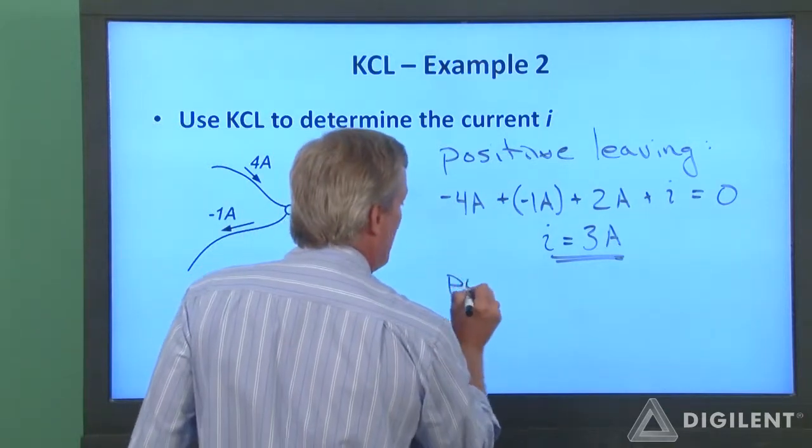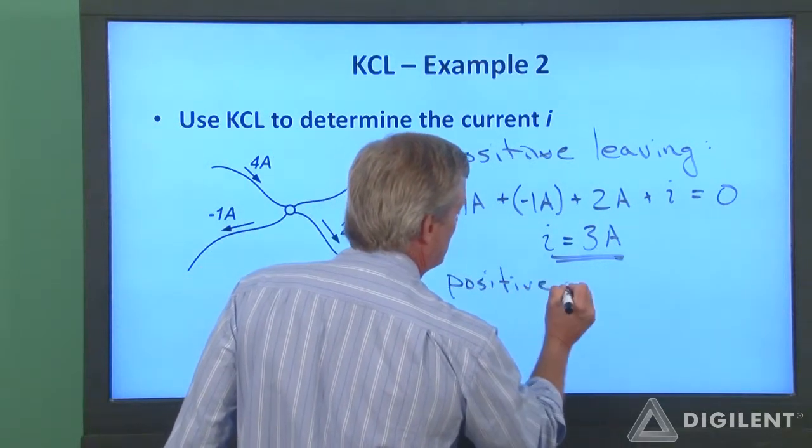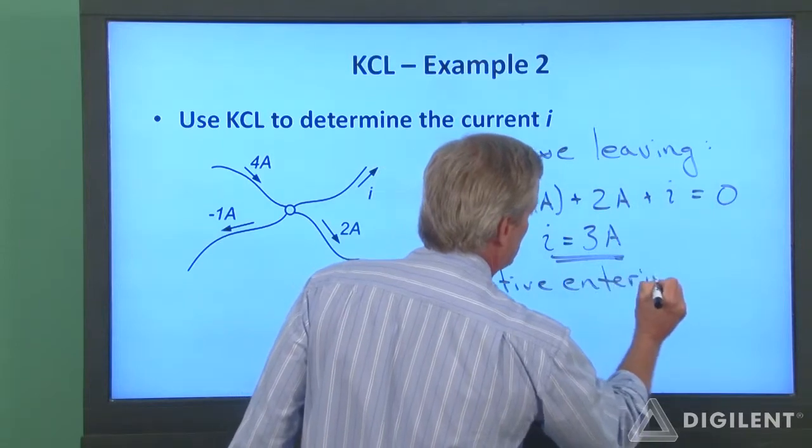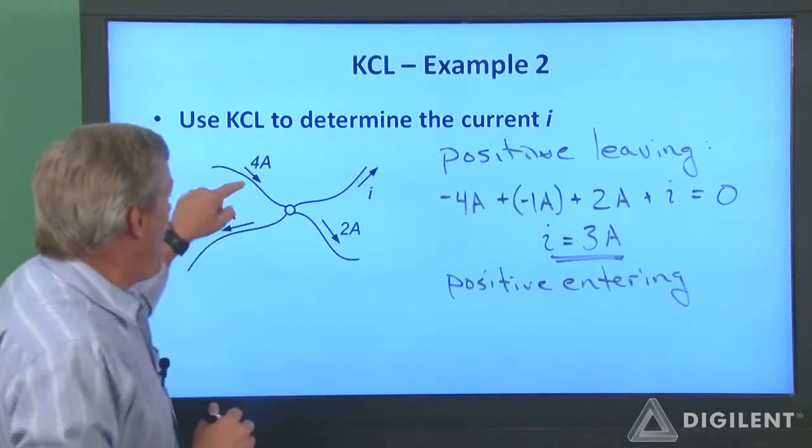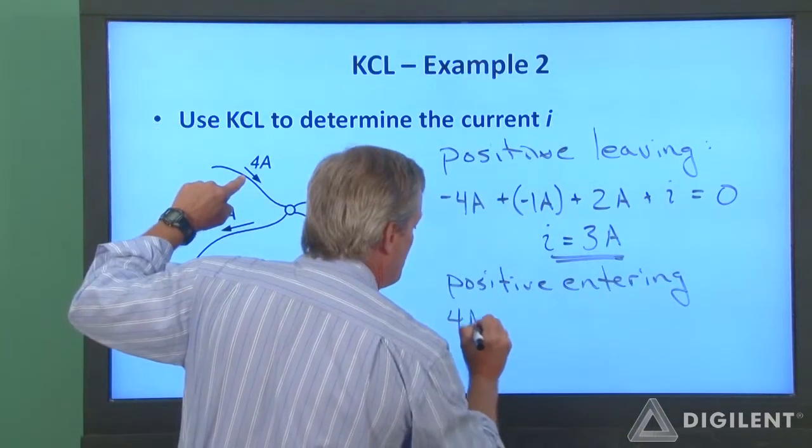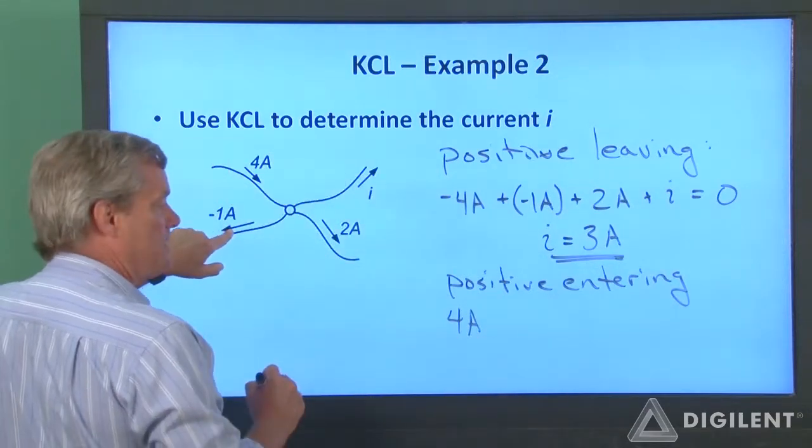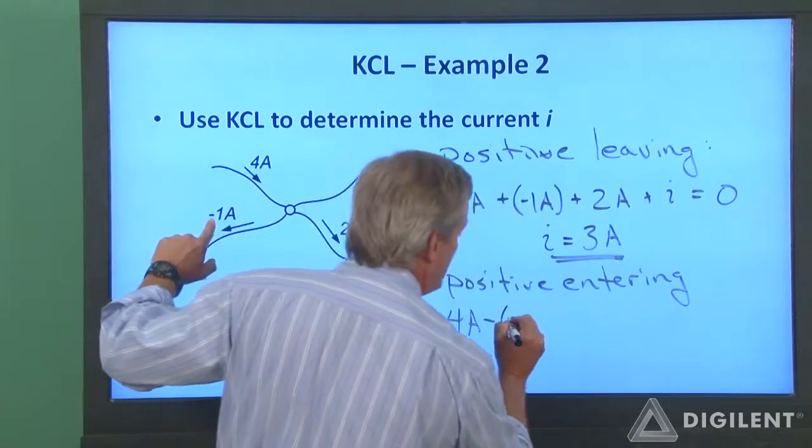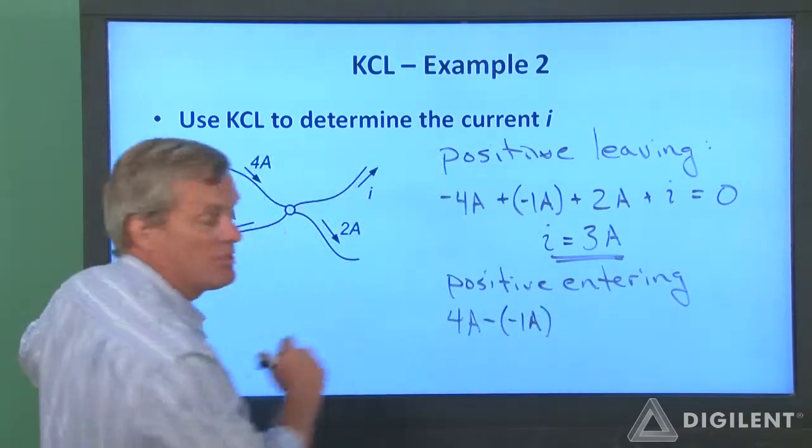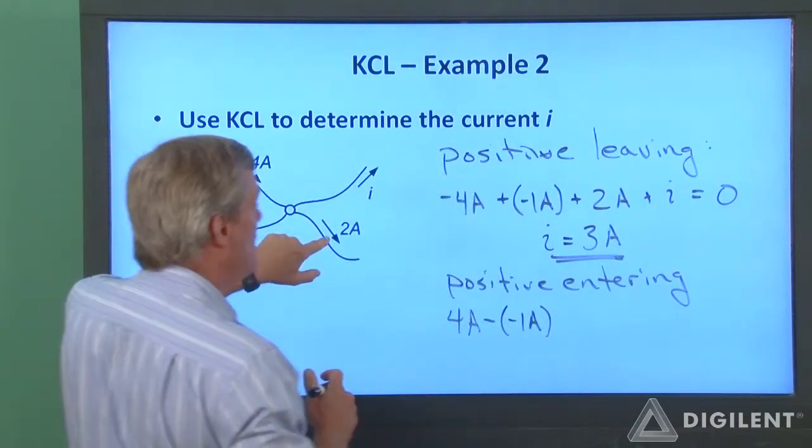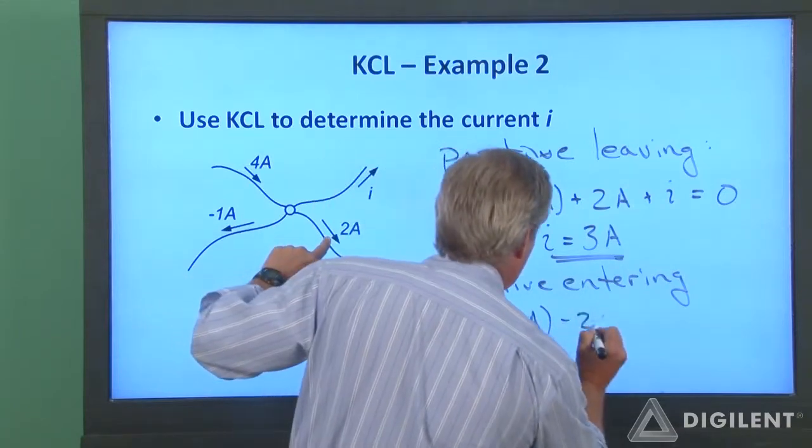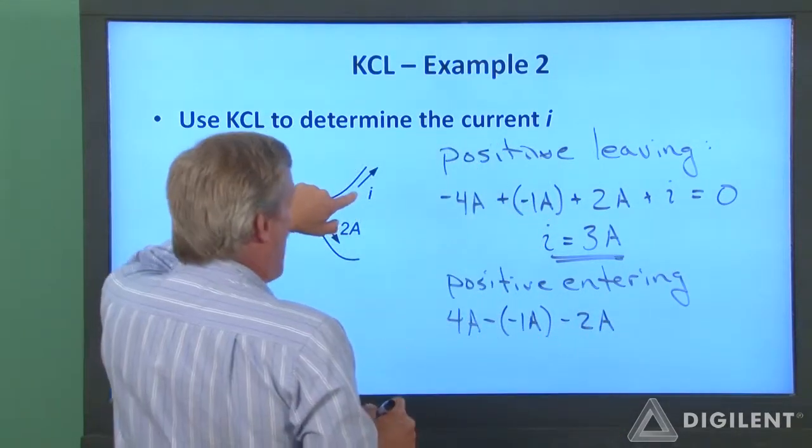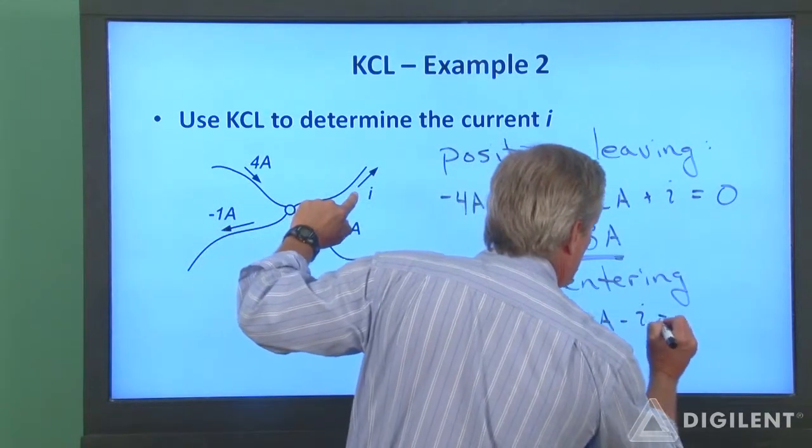If we assume that positive is entering, on the other hand, now 4 amps is a positive contribution. This is leaving, so it's a negative contribution, but it's negative minus 1 amp, which is going to add 1 amp to my total. 2 amps is leaving, so that's a minus 2 amps. I is leaving, so that's negative I. That sums to zero.